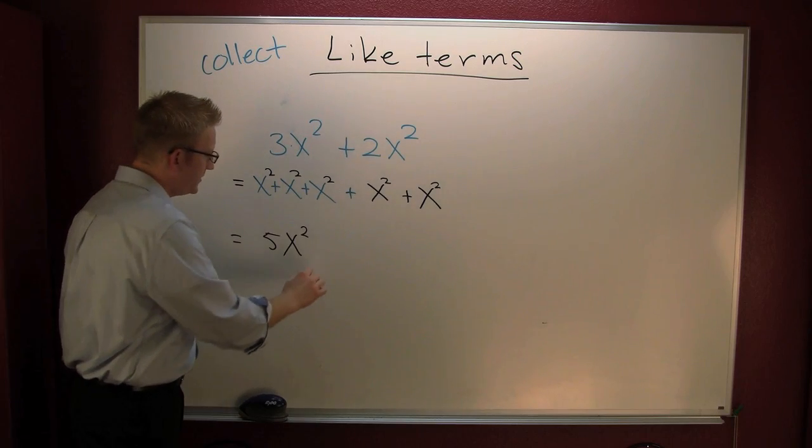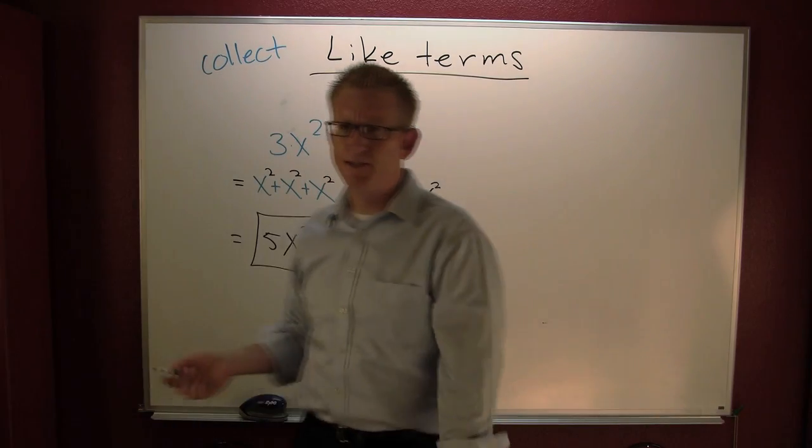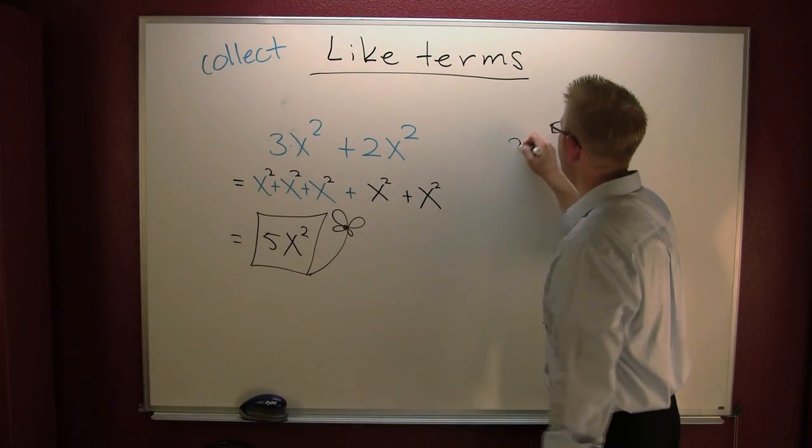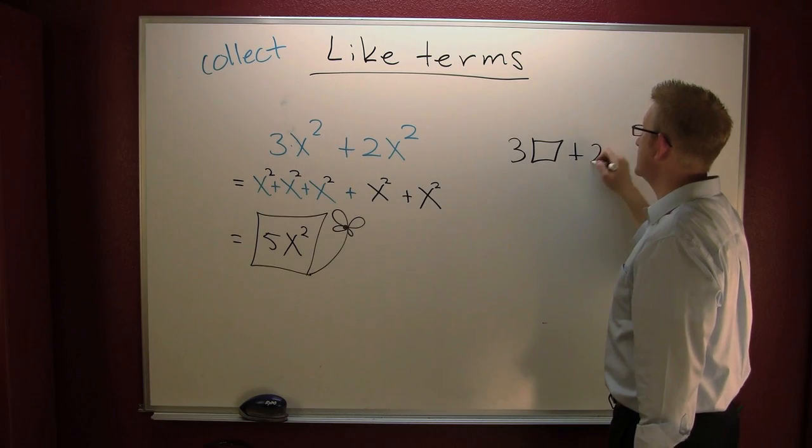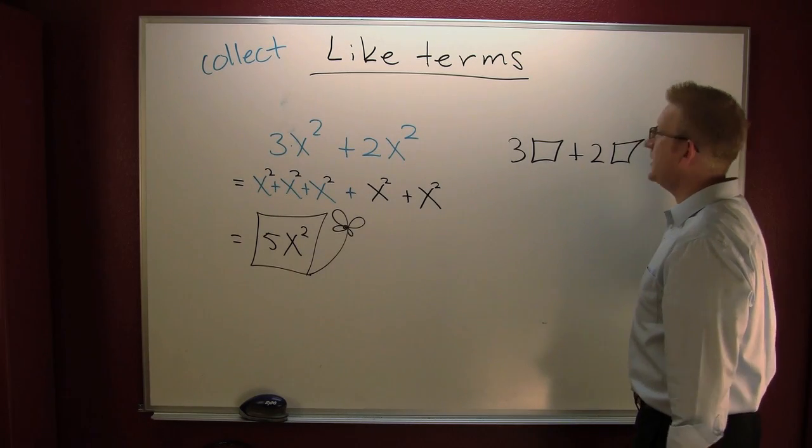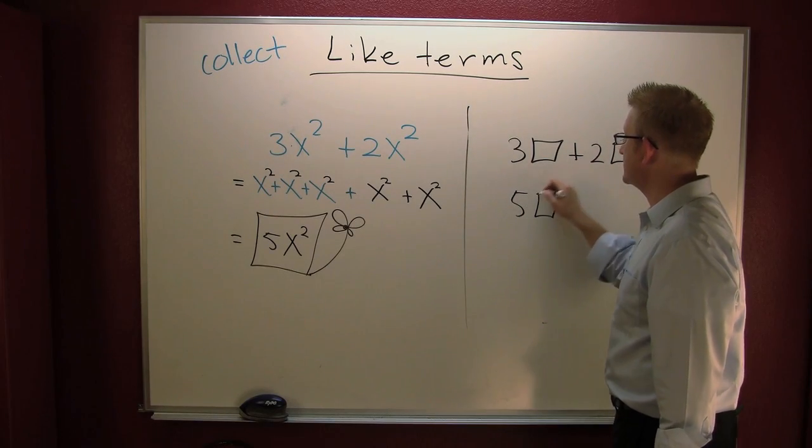And then perhaps you can see it with boxes and squares. If you had three squares plus two squares, how many squares would you have in total? You would have five squares.